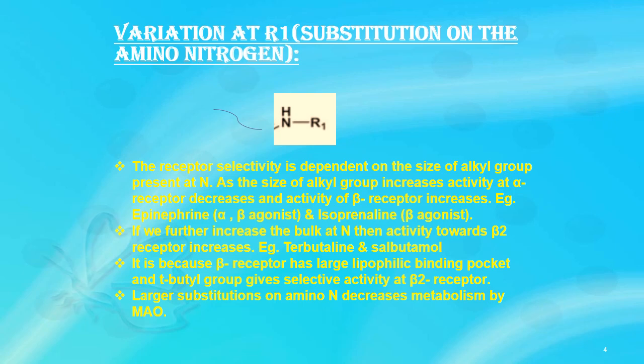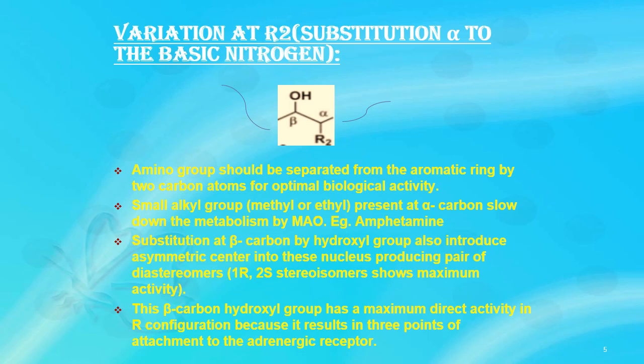Larger substitution on amino nitrogen also decreases metabolism by MAO — monoamine oxidase — which oxidizes monoamines in the structure. Comparing norepinephrine to drugs like isoprenaline, terbutaline, and salbutamol, the latter drugs contain bulkier groups at the nitrogen. Because these are not simple monoamines, they are not metabolized by monoamine oxidase, producing a longer duration of action.